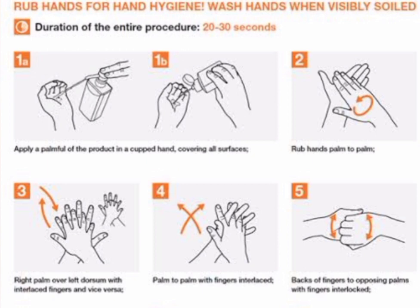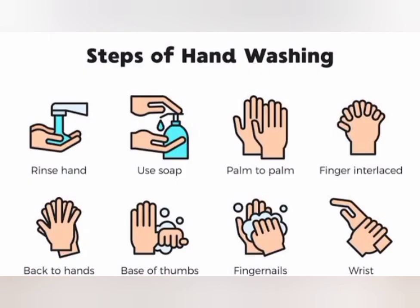Before doing any surgical procedure, you need to do this type of hand washing. These are the eight steps of hand washing. The duration of the entire procedure should be 20 to 30 seconds. First, apply soap or solution on your hand and rinse. Then rub your palm, interlace your fingers, rub the back side of the hand, base of the thumbs and fingernails in a rotational motion — forwards and backwards. Finally, wash the wrist. Once dry, your hands are safe.